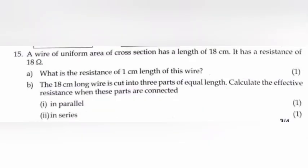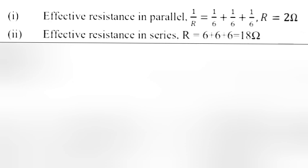Question 15: A wire of uniform area of cross section has a length of 18 cm. It has a resistance of 18 Ohm. A: What is the resistance of 1 cm length of this wire? Answer: 1 Ohm. B: The 18 cm long wire is cut into 3 parts of equal length. Calculate the effective resistance when these parts are connected 1 in parallel, 2 in series. Answer 1: Effective resistance in parallel 1 by R equal 1 by 6 plus 1 by 6 plus 1 by 6, R is equal 2 Ohm.